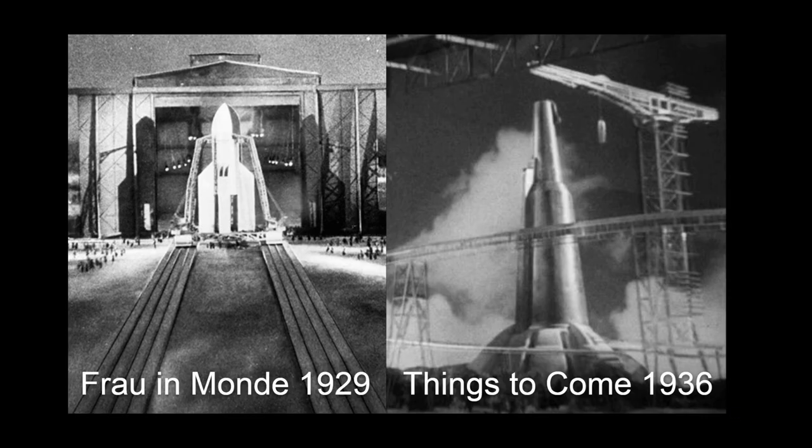The first shown rocket in movie history was Frau & Mond in 1929 that had an actual vehicle assembly building and a set of tracks to the launch site that looks remarkably like Cape Kennedy.